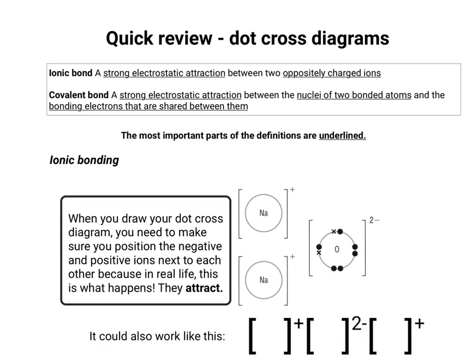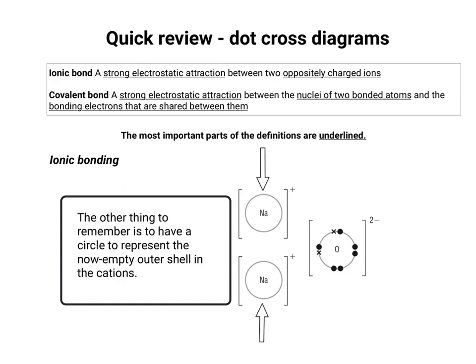You can also orientate a 2- next to 2-pluses, showing that there's going to be attraction either side of the 2- to signify that the positively charged ions — cations — are in the right places. You also need to remember to have an empty circle in the cation, because that represents the empty outer shell, or the outer shell that has now lost its electrons to the anion — in this case the oxide ion.